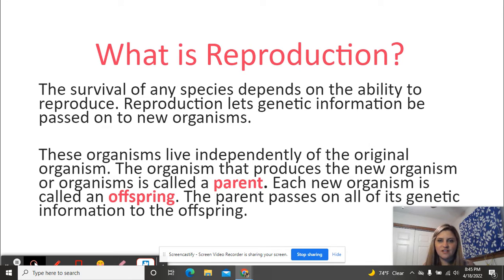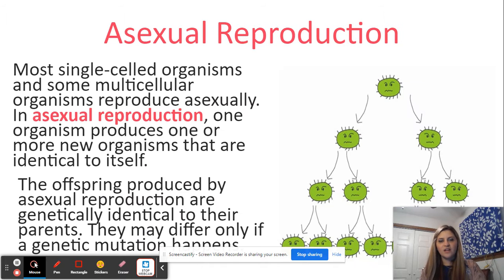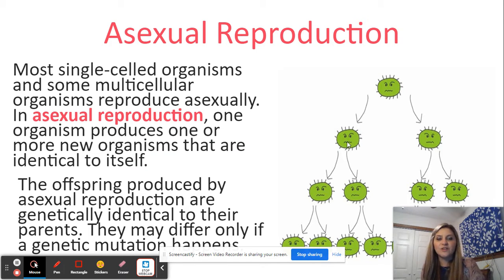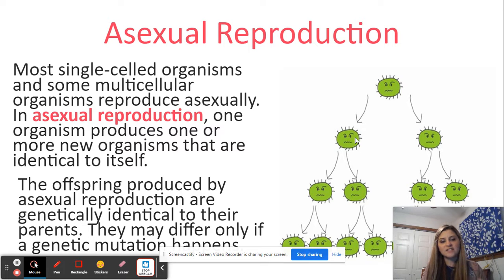Before we move into asexual reproduction — if putting 'a' in front of a word means 'not,' what does asexual reproduction mean? Asexual reproduction means not sexual reproduction. It happens in most single-cell organisms and very few multicellular organisms, because it's one parent that copies their DNA and makes an identical copy of itself.